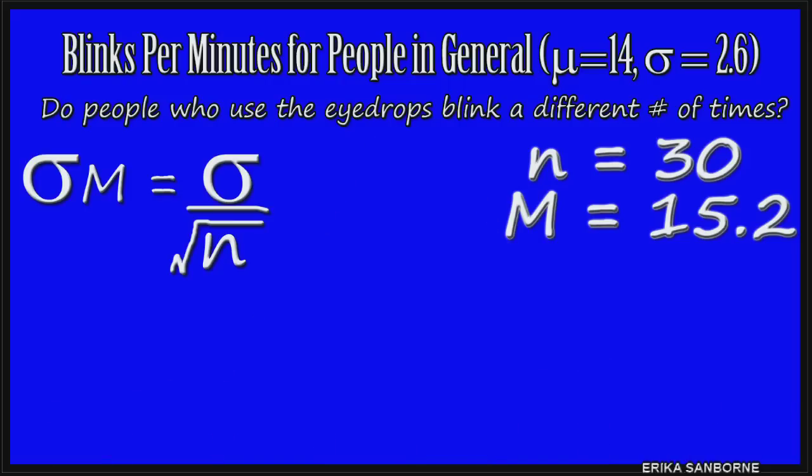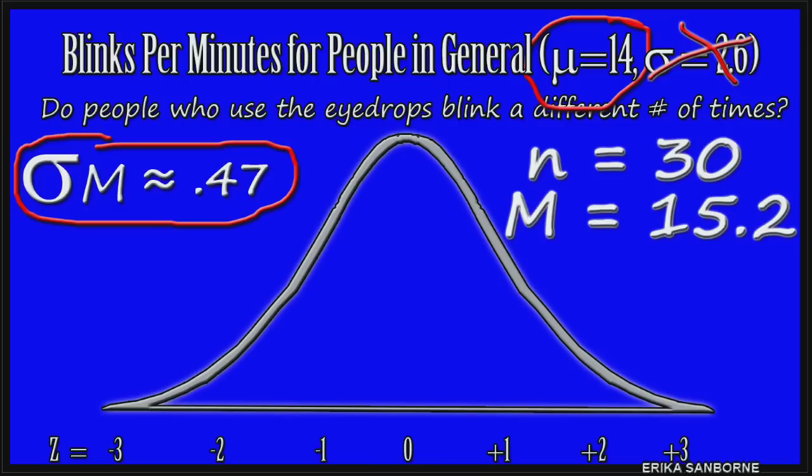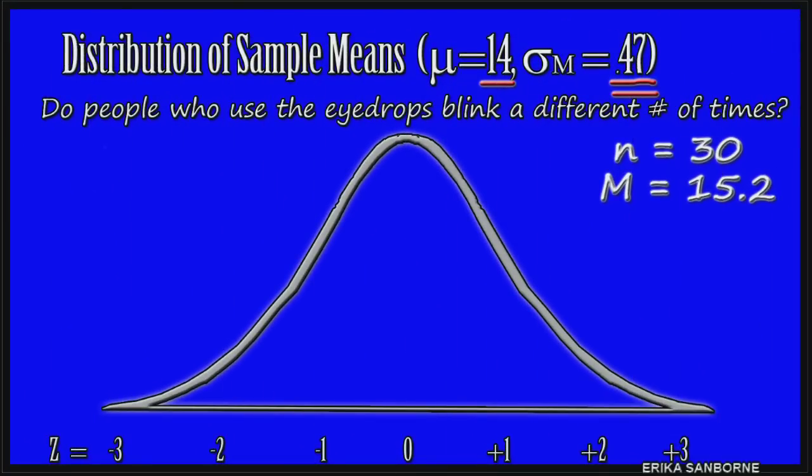This is the formula that tells us on average how spread out sample means of 30 people will be on the blinking distribution. It's the standard deviation and, in this case, it's our standard error of the mean. It's called that because all we really, really want to know in research is the thing we can never know, which is the population mean for our entire group of interest. Super. This is now a good comparison distribution. It's a distribution of sample means for 30 people at a time on blinking. Now we have something useful.